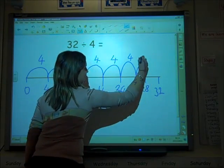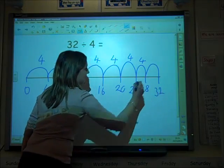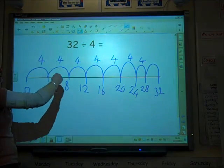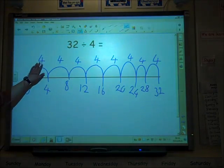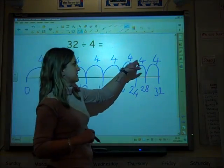We do make it clear to the children actually it doesn't matter how big the jumps are—the important thing is the number. How many fours have I got? One, two, three, four, five, six, seven, eight. The answer is eight.